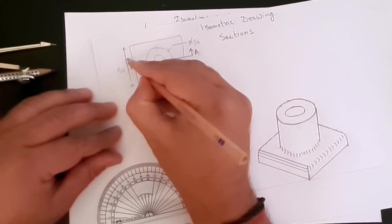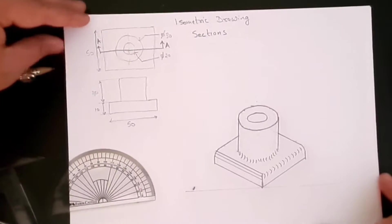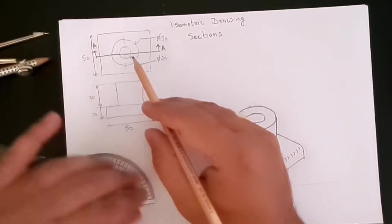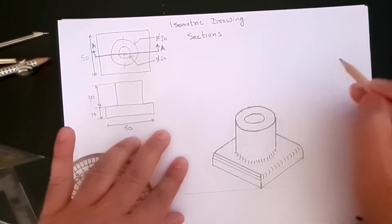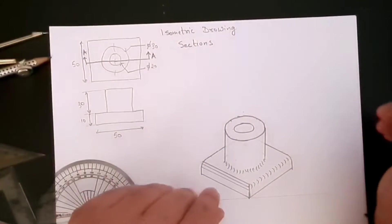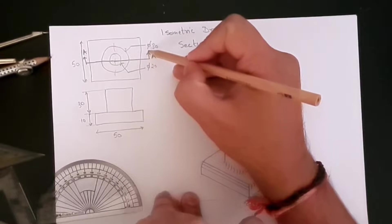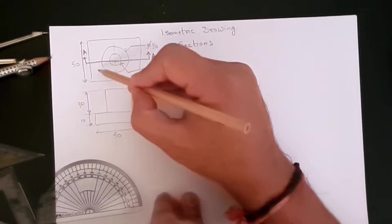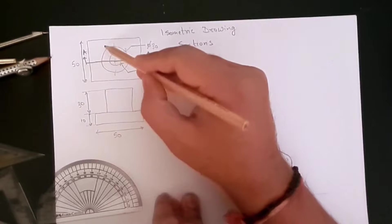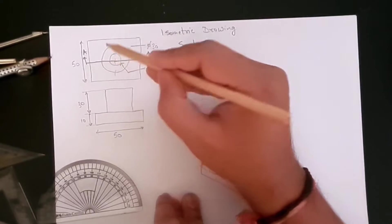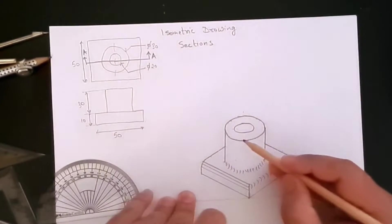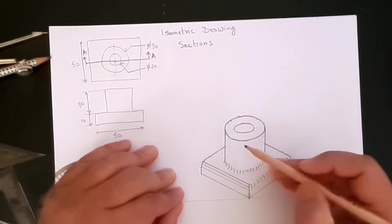So let's call this section A-A. We have to show that section as an isometric view. So how do we do that? Well, in here, as the section is pointing in this direction, it means that this portion is removed and this section has to be shown. Same thing here.